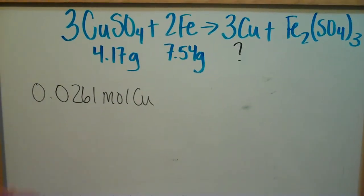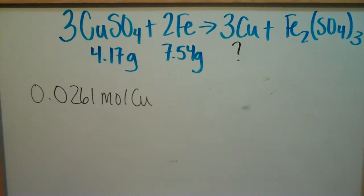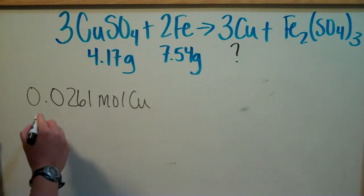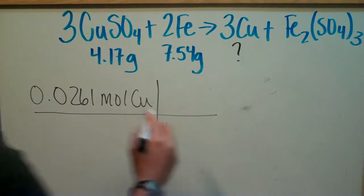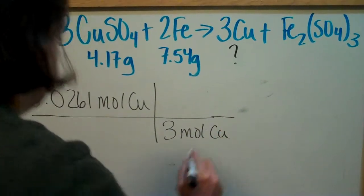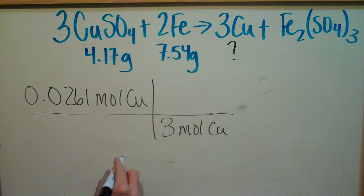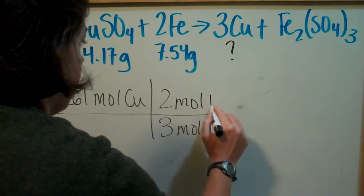What we're going to do to determine how much extra iron we're going to have left over is pretty simple. What we're going to do is just pull out our mole ratio. You're going to realize that three moles of copper is going to react with two moles of iron.